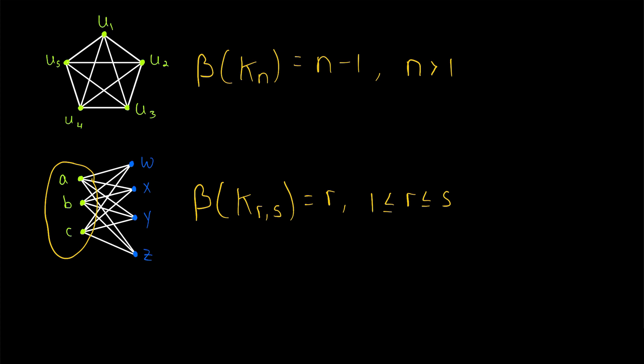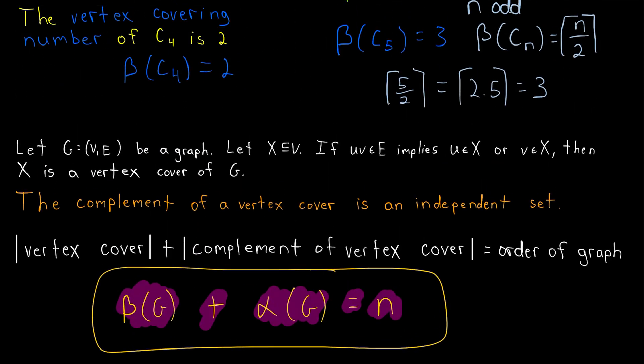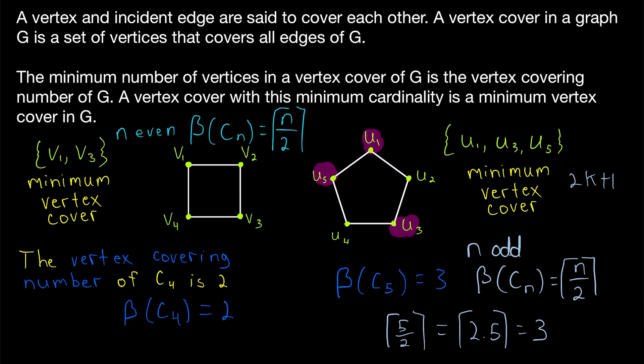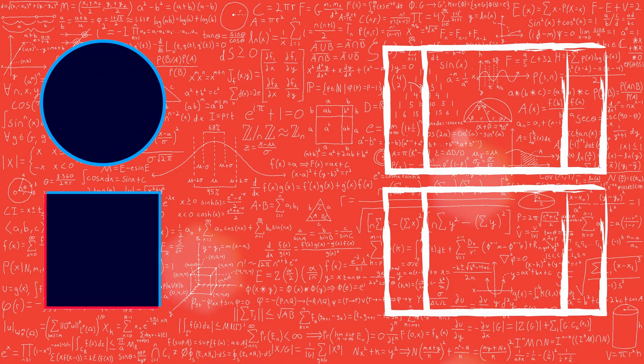The last things to mention: if a graph has no edges, any subset of the vertex set is technically a vertex cover. And we're guaranteed that every graph has a vertex cover, because you can't have an edge without incident vertices — so taking every vertex from a graph always gives a vertex cover. To summarize: a vertex is said to cover its incident edges. A vertex cover in a graph is a set of vertices that covers all of the graph's edges. A vertex cover of minimum cardinality is called a minimum vertex cover, and the number of vertices in a minimum vertex cover is the graph's vertex covering number, denoted beta of the graph.